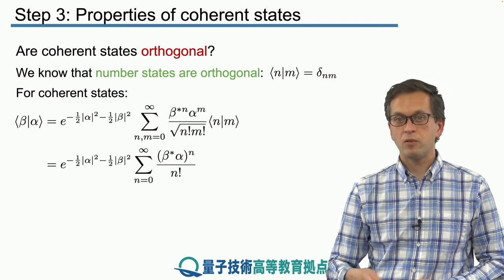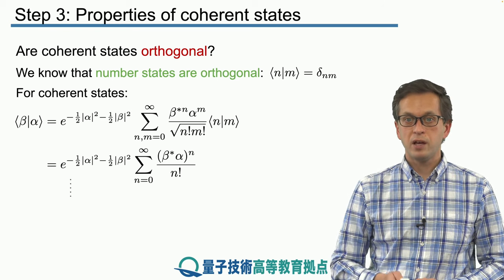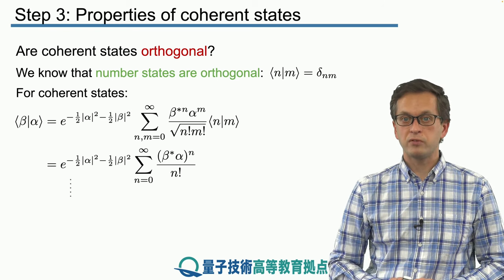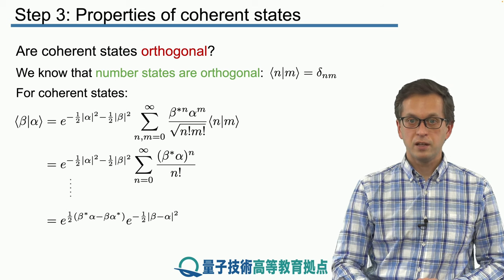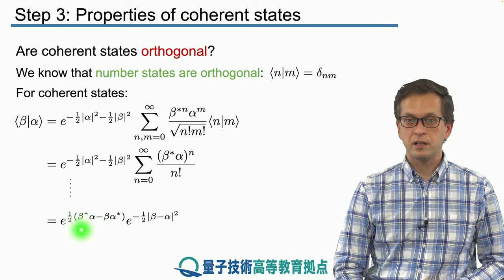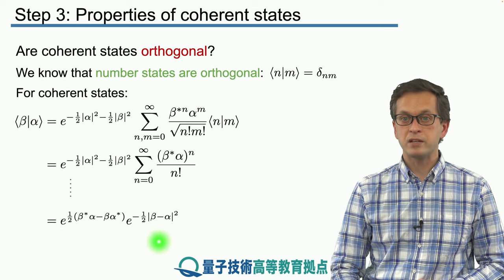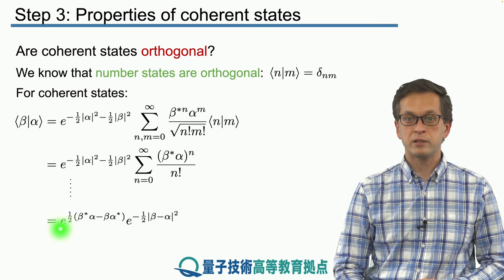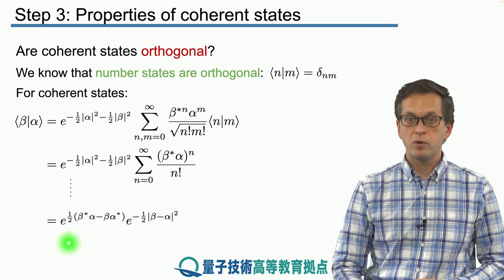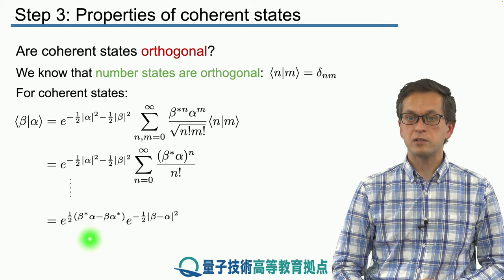We do a bit of algebra, which we're going to skip, and show you the final expression. The inner product between two coherent states alpha and beta is given by a first exponential times a second one.